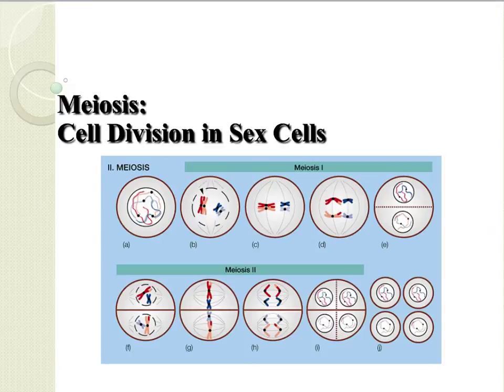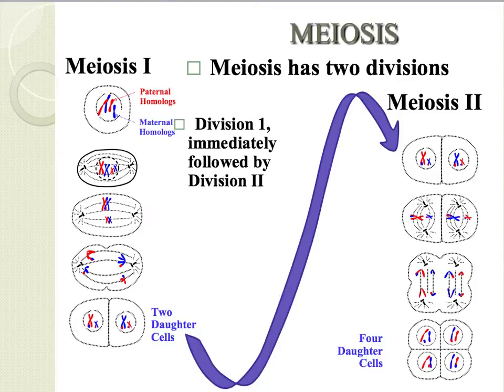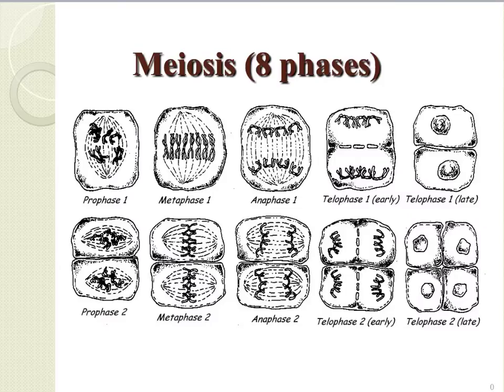Let's take a quick look at meiosis now. Meiosis is a type of cell division that produces sex cells, also called gametes. Gametes have a haploid number, meaning that they only have half of the chromosomes that you would find in a normal body cell. In humans, sex cells have 23 chromosomes, while a body cell contains 46. Meiosis has two divisions — we call the first meiosis I and the second meiosis II. This is a quick diagram that shows all of the stages of meiosis — we have eight in total.